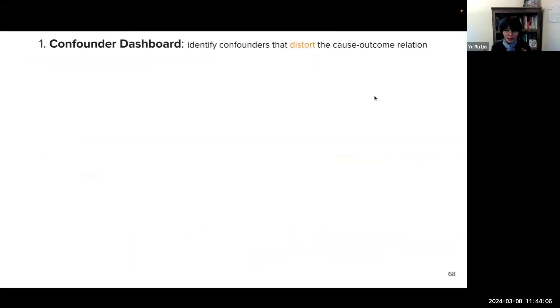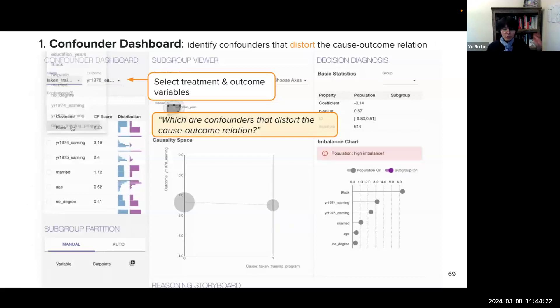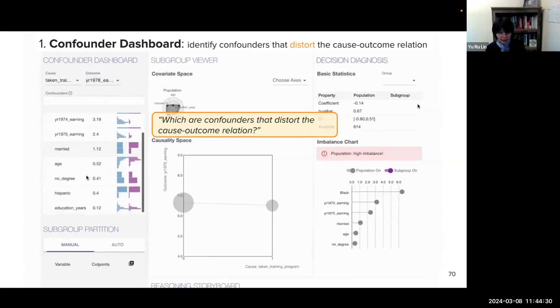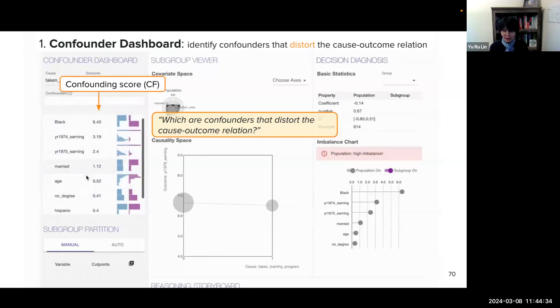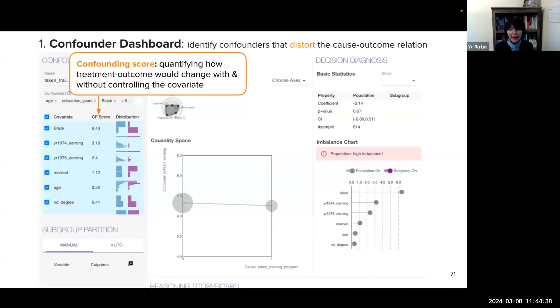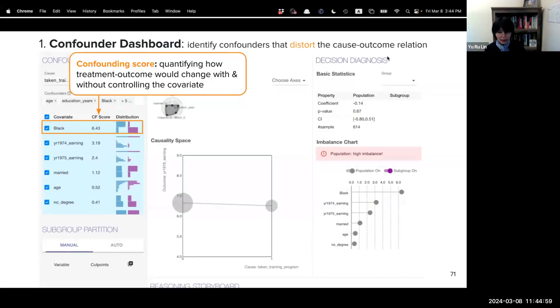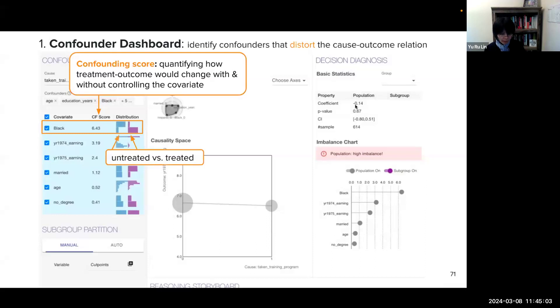So let's see how the system looks like. So the confounder dashboard helps answer which are confounders that distort the cause-outcome relationship. So users can first select the treatment and outcome variables. And these are the minimal information the system needs to know. And then, the system can rank the remaining variables by these confounding scores. So the scores quantify how treatment outcome would change with and without controlling each of the covariates. And also, users can now compare the treated and untreated distribution for each of the variables to understand which might be the confounding variables.